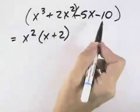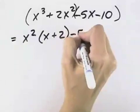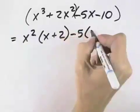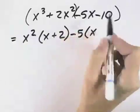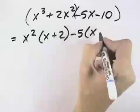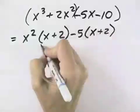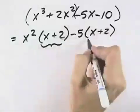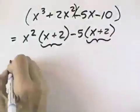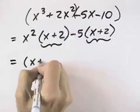In my second two terms, I can see a common factor of negative 5. And when I divide that out, I'm left with an x, and negative 10 divided by negative 5 is positive 2. I can see that this is going to work because I can see the common factor of x plus 2.